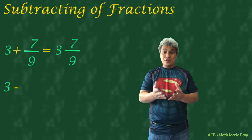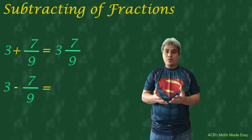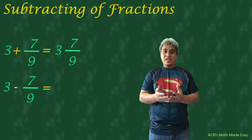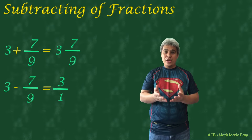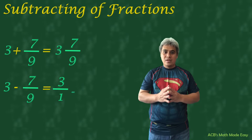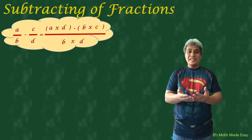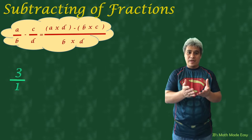But for 3 minus 7 over 9, we cannot just subtract them directly. We can subtract them by getting the LCD or LCM of the denominator, or by using the formula — just change the plus to minus. We will be using the formula. 3 can be written as 3 over 1, so it will become 3 over 1 minus 7 over 9. This is our formula: 3 over 1 minus 7 over 9.